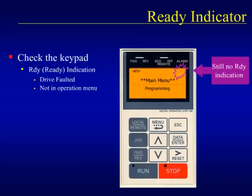Another common cause for the ready indication not to be shown is that someone has pressed the menu key and the drive is no longer in the operation menu where it needs to be to accept a run command. The drive will not stop just because the ready indication disappeared when we exited the operation menu, but it will refuse to restart without the ready indication. So if the drive is running fine but there is no ready indication, we need to get back to the operation menu before the next run command.